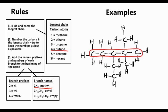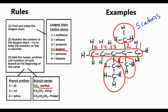And then we need to number it. But remember, we've got to keep the numbers as low as possible. So if we go from left to right, our numbers would be higher. It's better to go from right to left here. Means we've got the two methyl groups on the second carbon, one ethyl group on the third carbon. And we've got five carbons in our longest chain. So it's based on pentane.